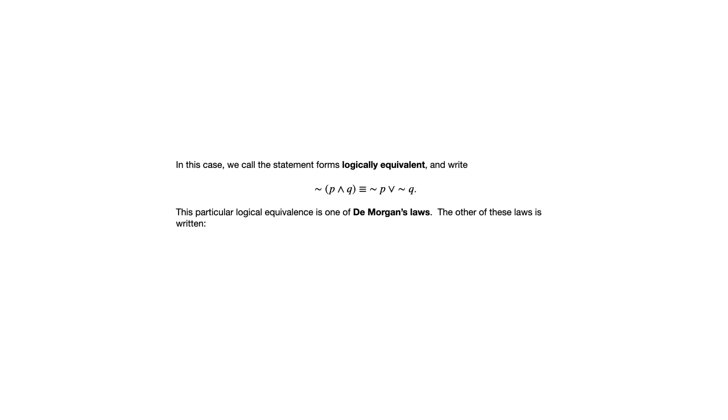So this logical equivalence is an example of one of DeMorgan's laws. And there's another one that looks like this. Not P or Q is logically equivalent to not P and not Q. And you can check for yourself. It might be a useful exercise to verify that second one using a truth table for the statement form on the left and a truth table for the statement form on the right, and verifying that yes, they give you the same truth values as each other.